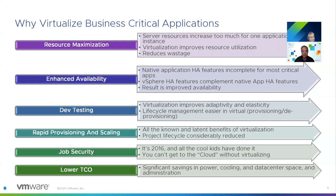Enhanced availability is another key benefit. Native application HA features are incomplete for most critical apps. For example, Oracle RAC provides app-level HA, but running Oracle RAC on a VMware platform also provides VMware HA at the infrastructure level. Deploying Oracle RAC across metro distance on a VMware stretch cluster gives you three levels of HA: application-level, infrastructure-level, and site-level.